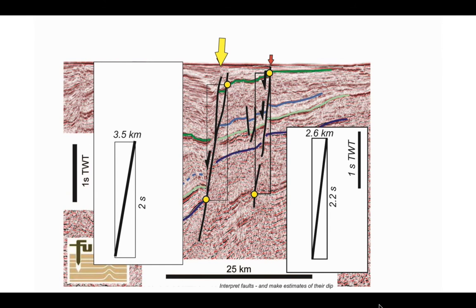Now this is in two-way time. To look at what their real orientation is, we have to convert the vertical scale from two-way travel time to depth. In order to do that, we need to assume a seismic velocity. Actually, a smart thing to do is assume a range of seismic velocities to get a range of values for what the orientation, the dip of the fault plane might be.